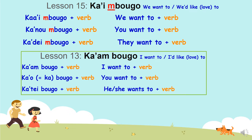You remember in lesson number 13 we learned how to say I want to, you want to, or he or she wants to. Now we will look at the plural: we want to, you want to, they want to. We say ka imbugo, ka numbugo, ka dembugo. Notice here, because it's plural, we have an M in front of bugo.